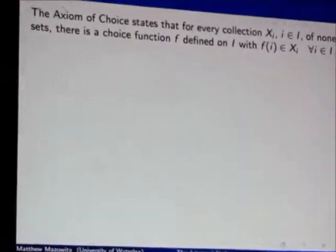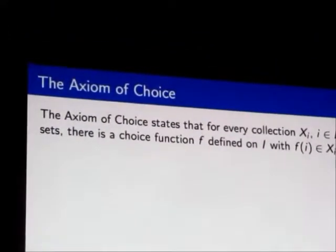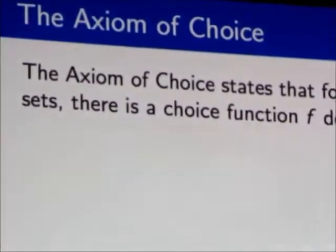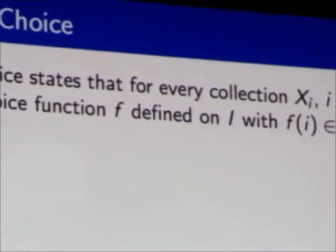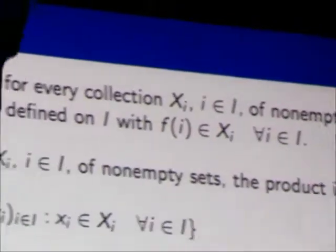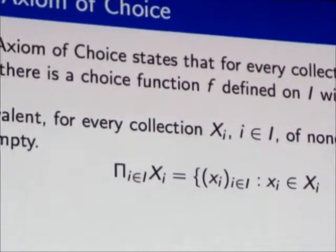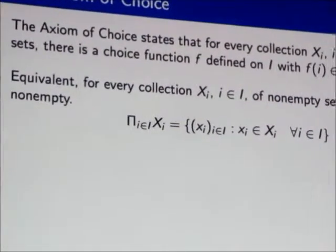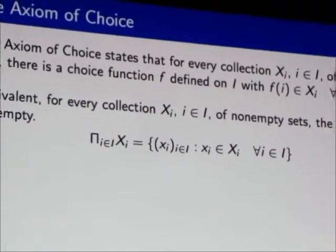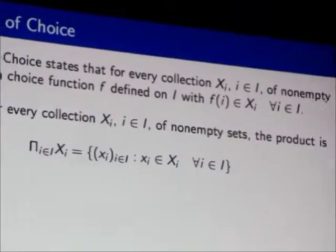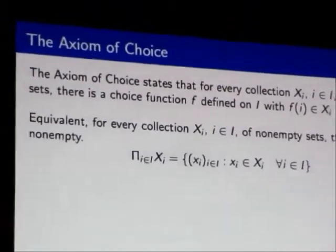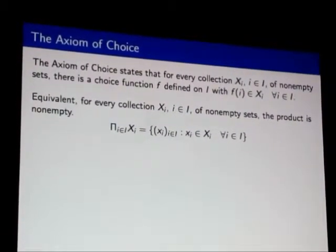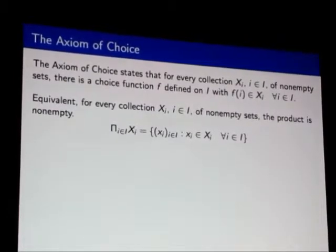Along comes Zermelo, and he proves that every set can be well-ordered using this new axiom that he calls the axiom of choice. The axiom of choice says that if I have a collection of non-empty sets, I can find a function that takes a value in each of those things. We call this a choice function because it's just choosing a particular element in each of those non-empty sets.